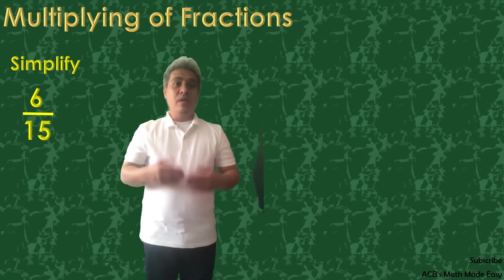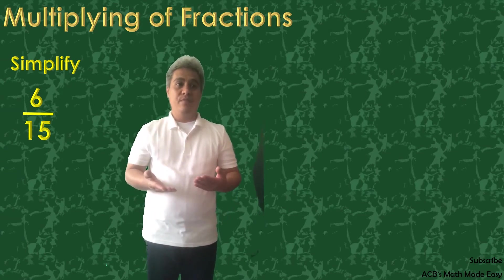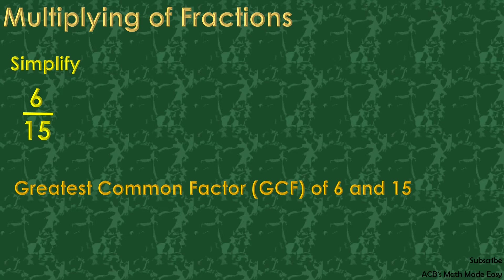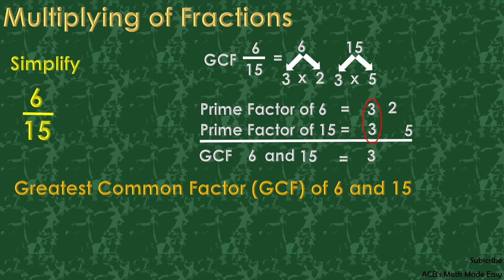To simplify it, we need to get the greatest common factor or what we call the GCF. This is how to get the GCF of 6 and 15 using factorization method. Just factor them out and get the common factor.